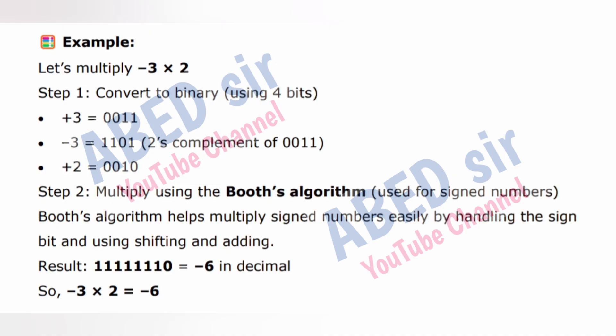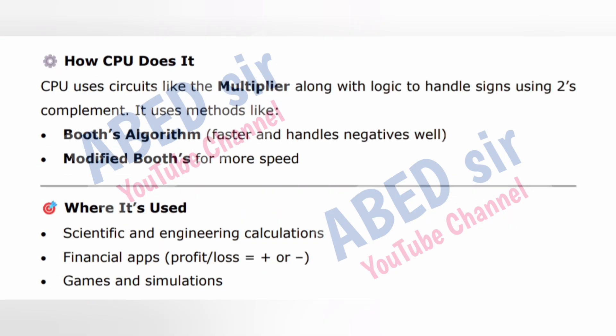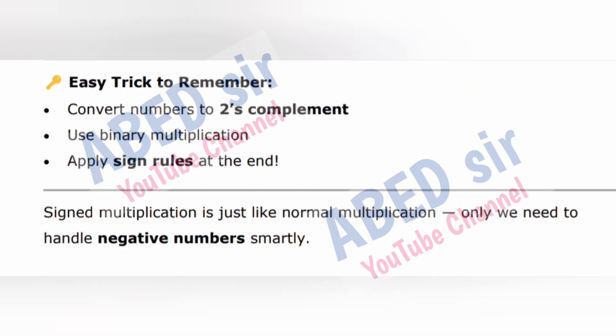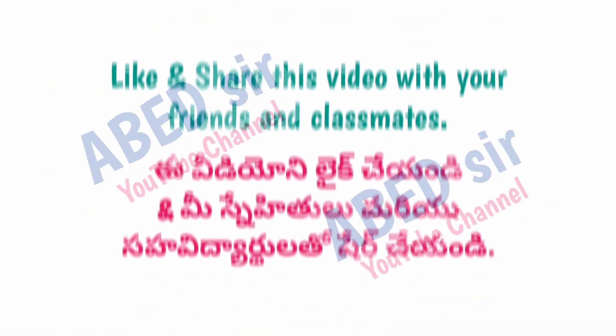How CPU does it: The CPU uses circuits like the multiplier along with logic to handle signs using two's complement. It uses methods like Booth's algorithm — faster and handles negatives well — and Modified Booth's for more speed. Where it's used: scientific and engineering calculations, financial apps (profit/loss equals plus or minus), and games and simulations. Easy trick to remember: Convert numbers to two's complement, use binary multiplication, apply sign rules at the end. Signed multiplication is just like normal multiplication — we just need to handle negative numbers smartly.